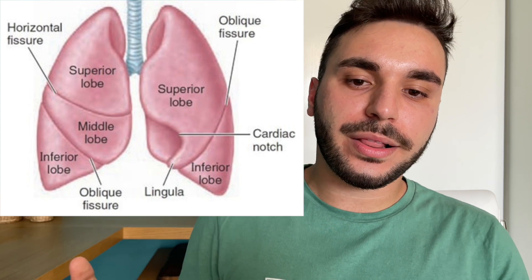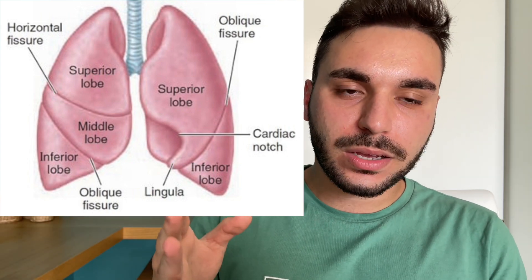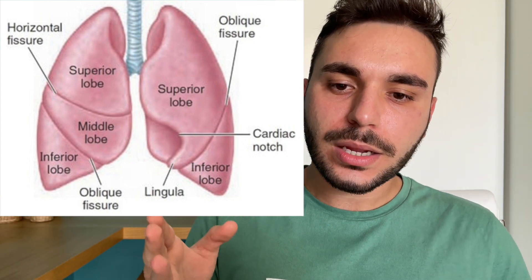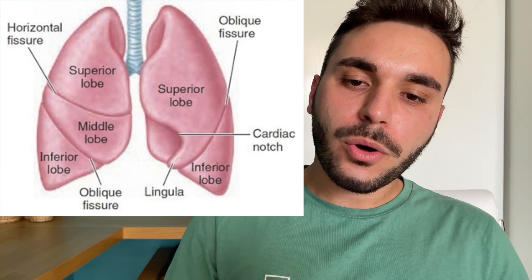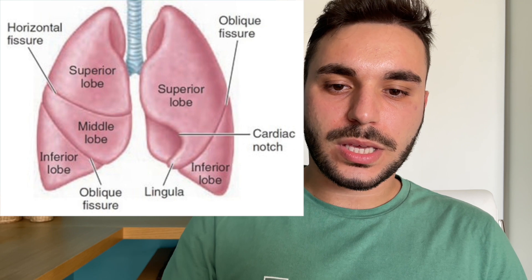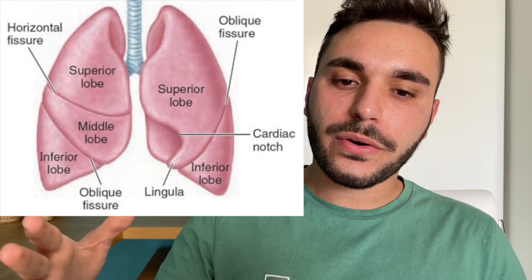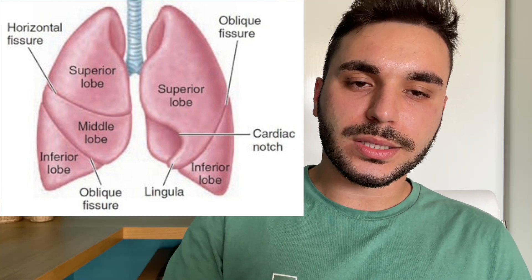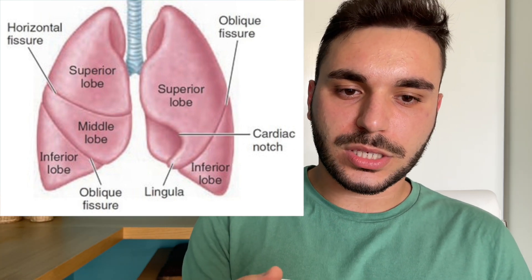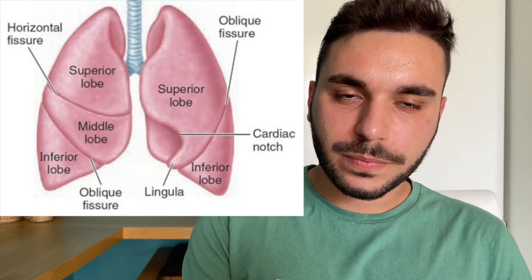It is very important to mention that the right lung has two fissures: the horizontal and the oblique one. We have three lobes: the superior, middle, and inferior, as you can see in the picture.